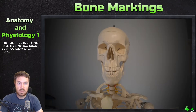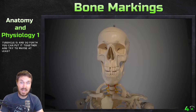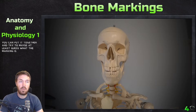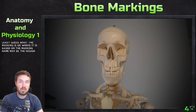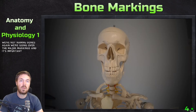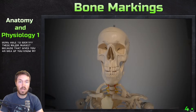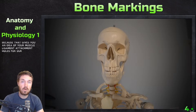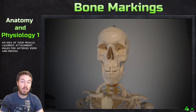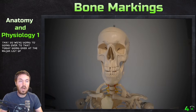So if you know what a tuberosity is, what a tubercle is, and so forth, you can put it together and try to maybe at least guess what the marking is or where it is based on the marking name and maybe the regions around it. We're not naming bones right now — we're going over the major markings. It's important to start being able to identify these, because that gives you an idea of muscle and ligament attachments, holes for arteries, veins, nerves, things like that. So we're going to be going over the major list of markings.